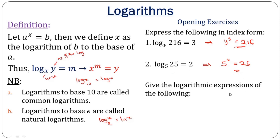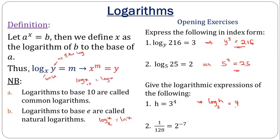We can also move from indices to logarithmic form. They are asking us to express the following two in logarithmic form. The base will always be the base of your log, the value here is what you have in the log, and the power will always be your solution. So 3 to the power of 4 is equal to h — that is exactly what we have. For the second one, the base 2 becomes the base of the log, the value 1 over 28 becomes the number of the log, and the power becomes the value of the whole expression.